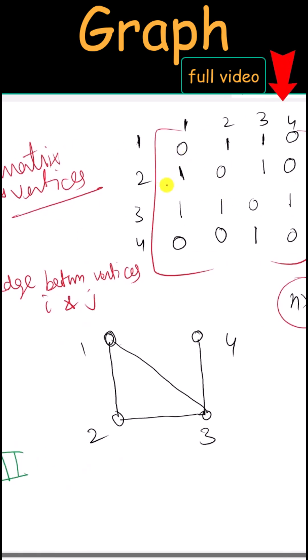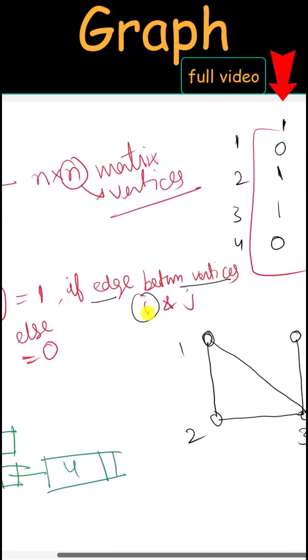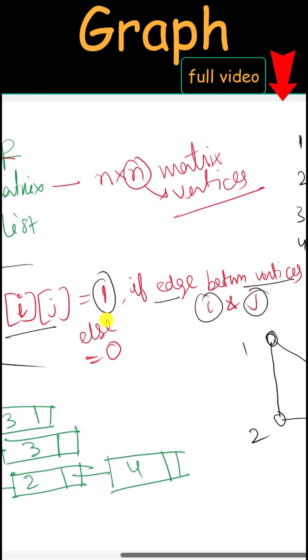The matrix consists of zeros and ones. If we have an edge between vertices i and j, we fill that position with 1. Otherwise, we fill it with 0.